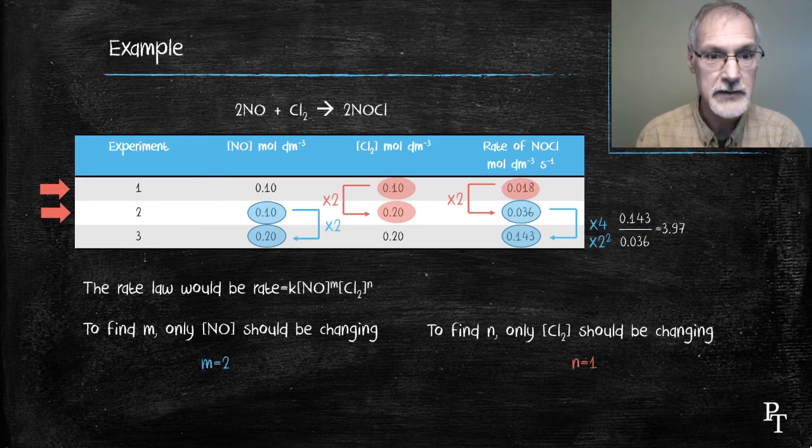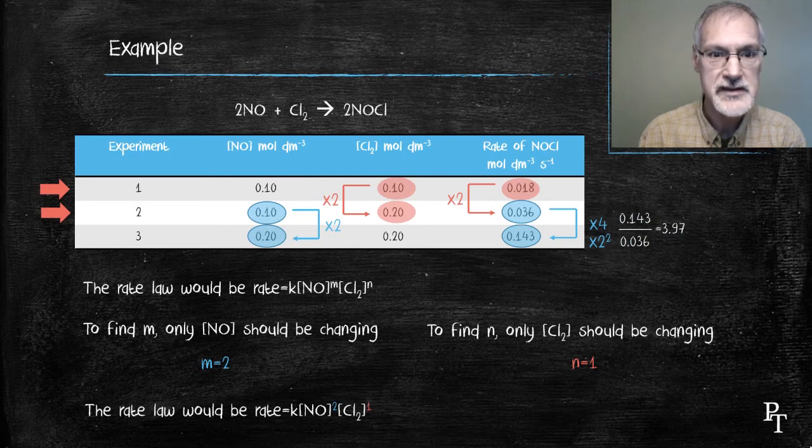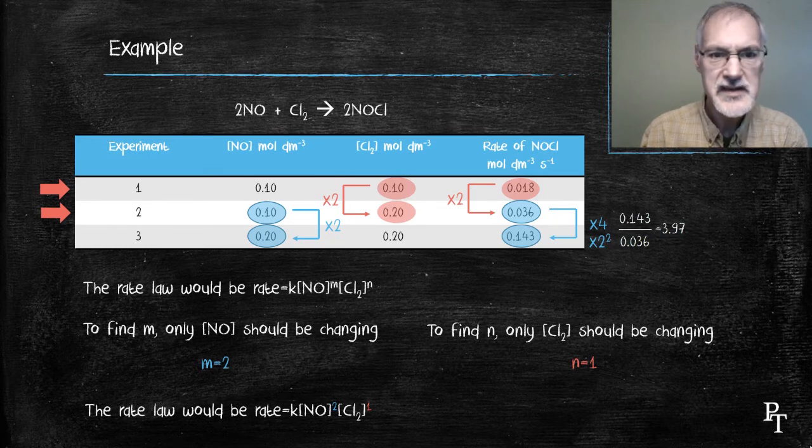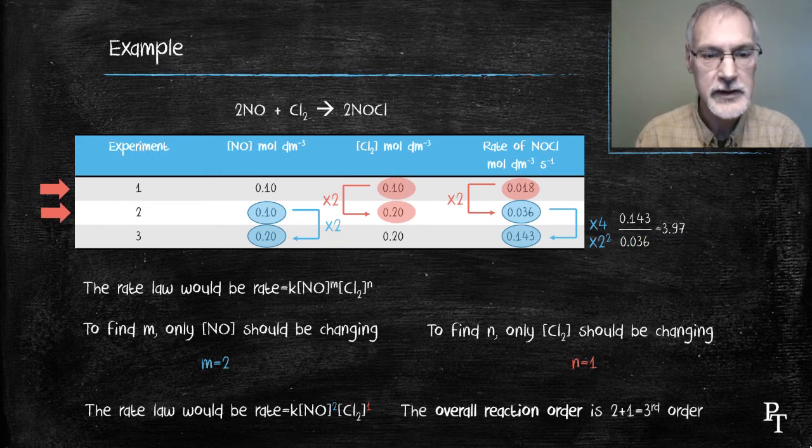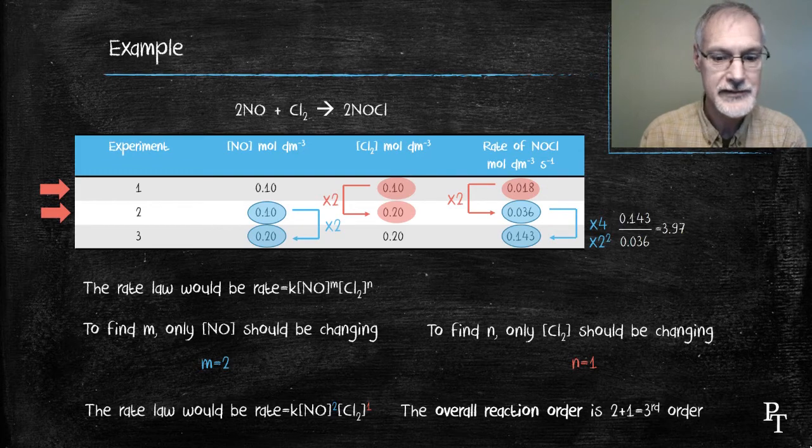I can now revisit my rate expression and rewrite it as the following, where I've replaced the exponents M and N with my now-known exponents, 2 and 1. We say such a reaction is third order. We obtain that by adding our two exponents together.